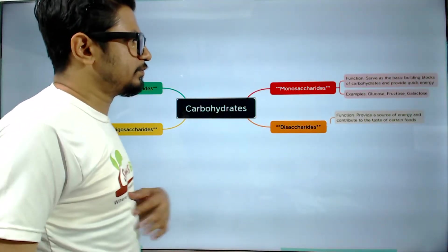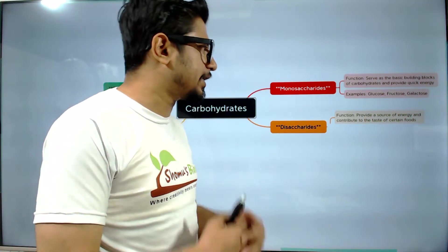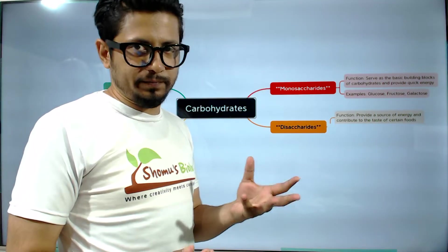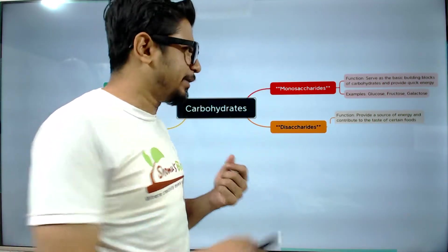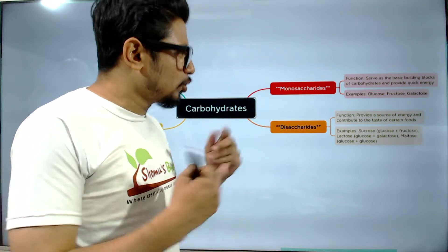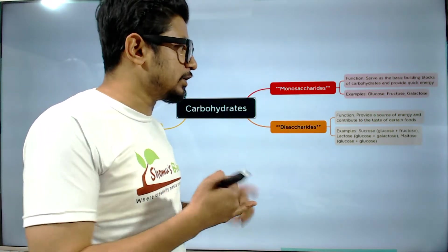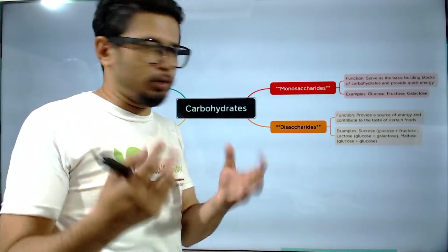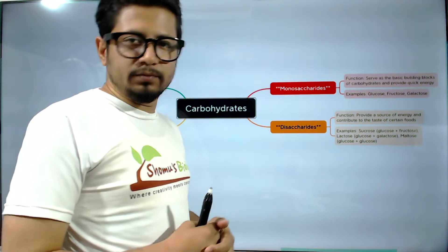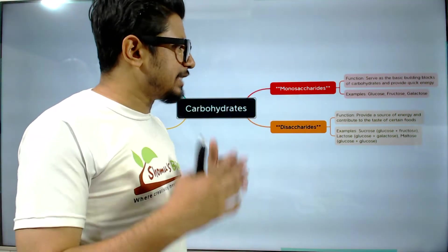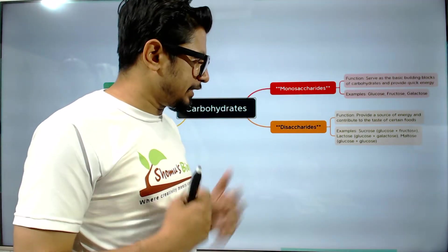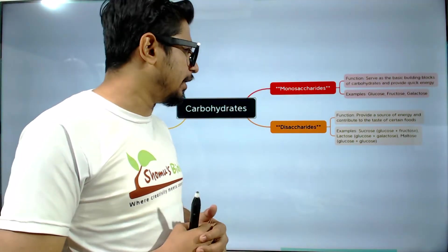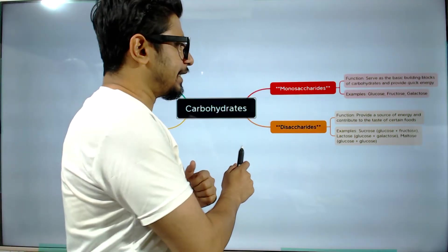Next is disaccharide, which provides a source of energy and contributes to the taste of certain foods — an aesthetic pleasure. Like sucrose, which is the combination of glucose and fructose, used as common sugar. Lactose, present in milk, has glucose and galactose in it. Maltose, on the other hand, has glucose and glucose added together. So these are the disaccharide types.